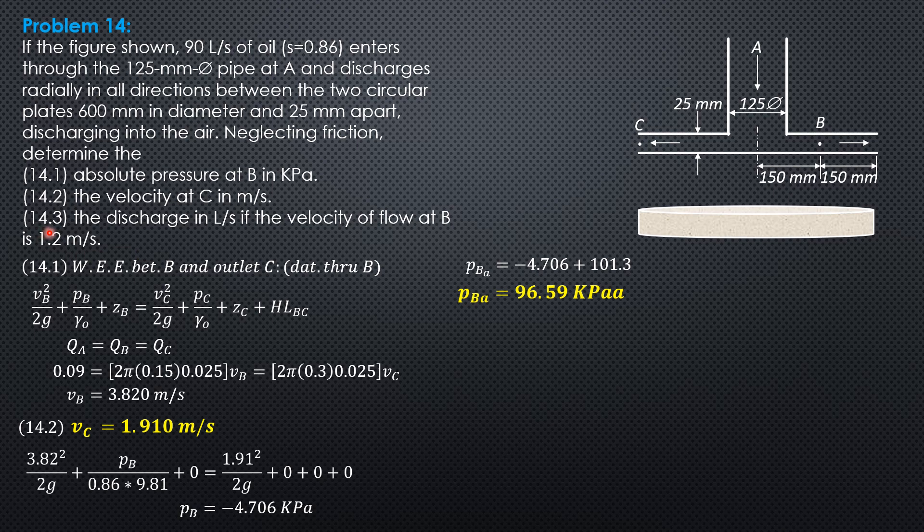For question 14.3, the discharge in liters per second if the velocity of flow at B is 1.2. Area at B times velocity: 2π times 0.15 times 0.025 times 1.2 times 1000. The discharge in liters per second is 28.27 liters per second.